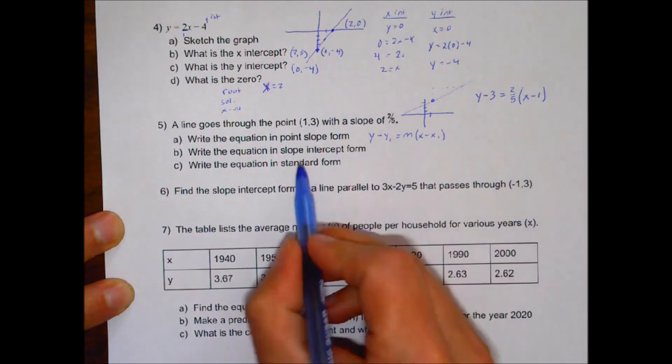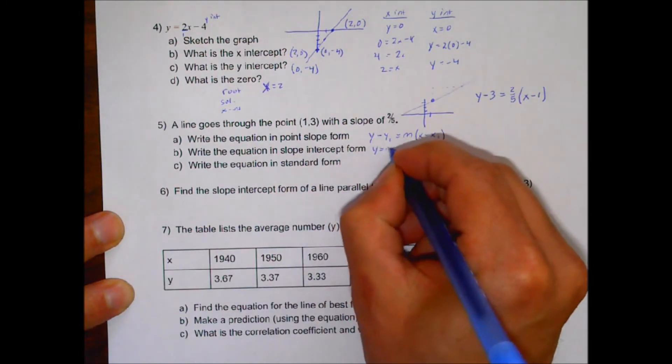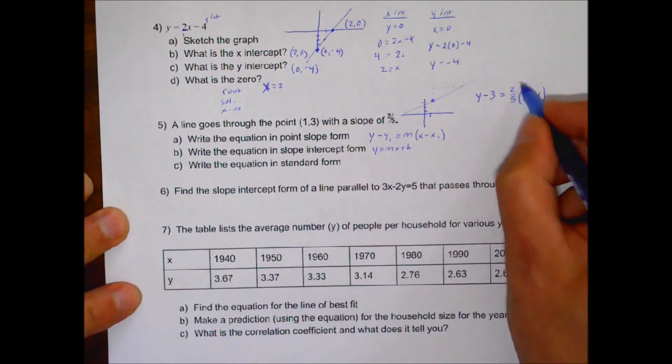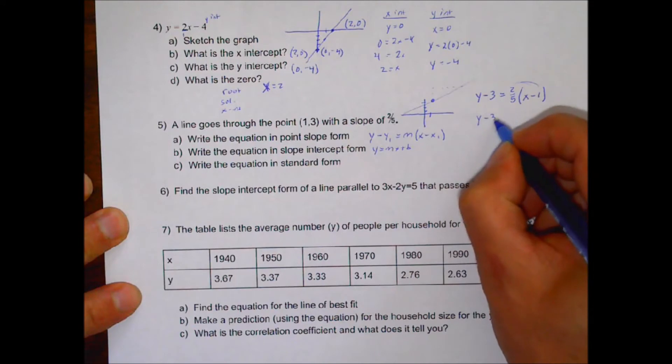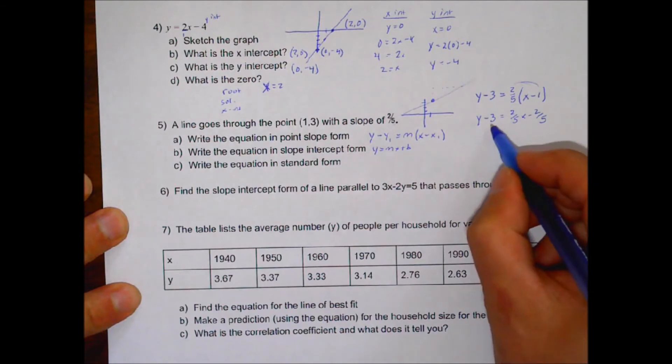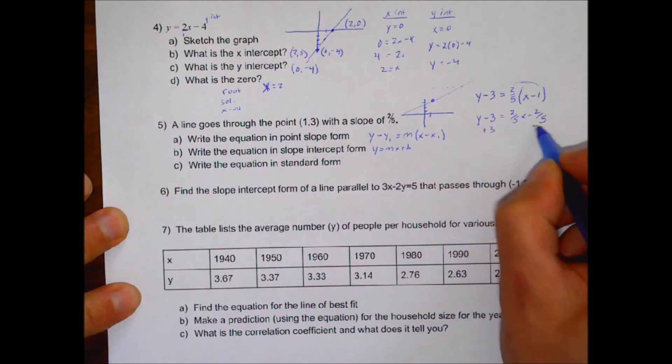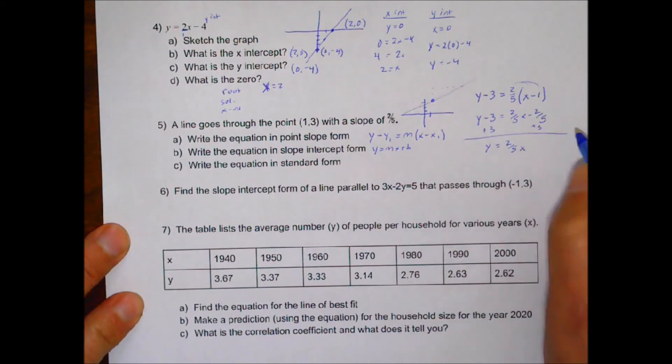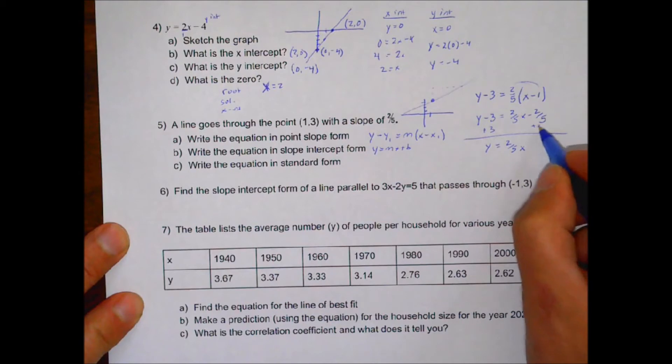To get it in slope-intercept form, that's the y equals mx plus b form, we have to solve this out to get y by itself. So you can distribute that through. And then to get y by itself here, we're going to add 3 to both sides of the equation. So we have y is equal to 2 fifths x. And let's see, 3 would be 15 fifths. So 15 minus 2 would be 13 fifths there. I'm okay if you also put 2.6. That would be fine as well.